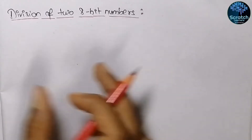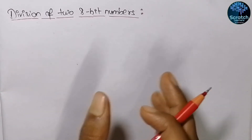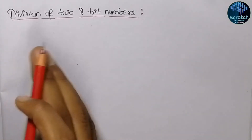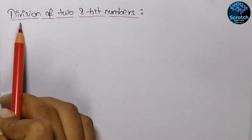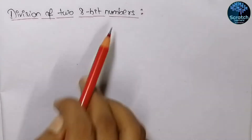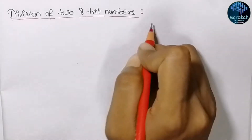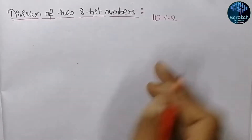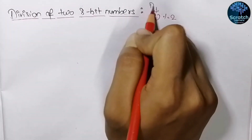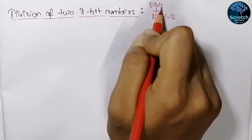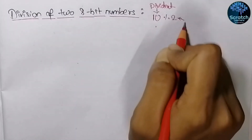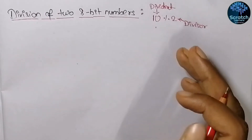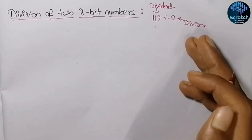We have seen in multiplication that by repetitive addition we can get the multiplication of two numbers. Similarly, by repetitive subtraction we can get the result of division of two 8-bit numbers. Let's say we want to divide the number 10 by 2 — 10 is the dividend and 2 is the divisor. So how can we divide it using repetitive subtraction?